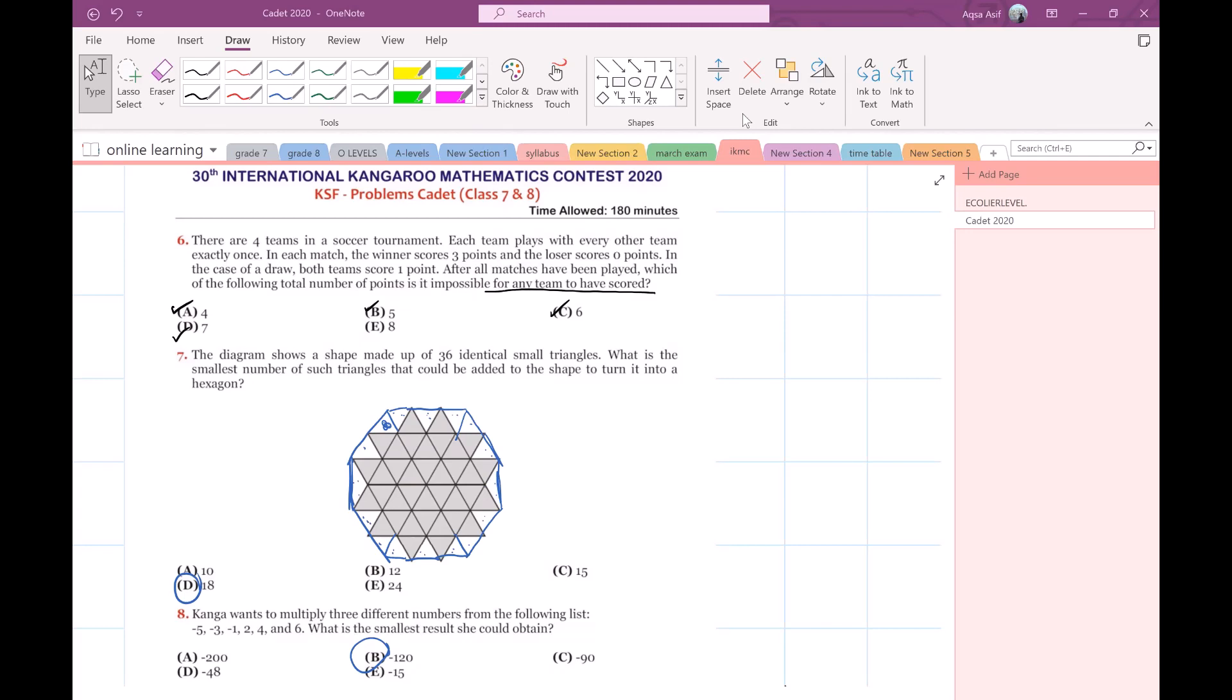Question number 6: There are four teams in a soccer tournament. Each team plays with every other team exactly once. In each match the winner scores 3 points and the loser scores 0 points. In case of a draw both teams score 1 point.